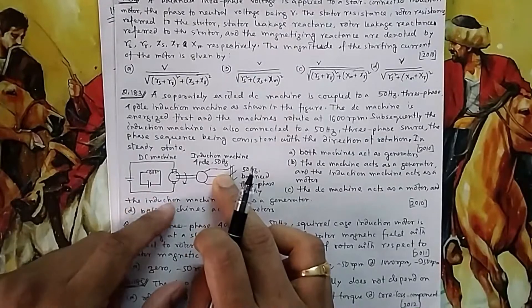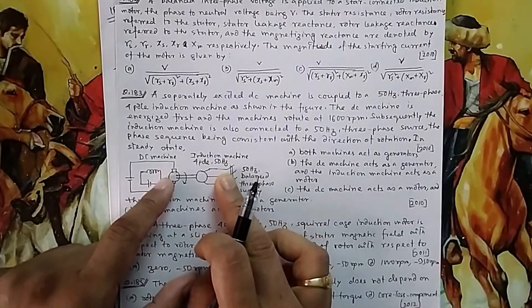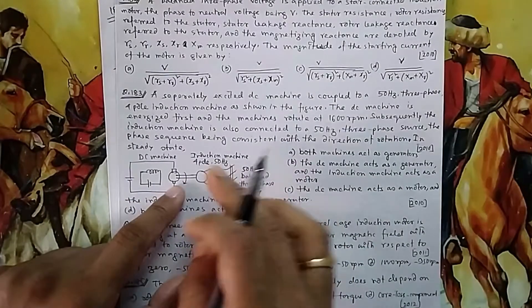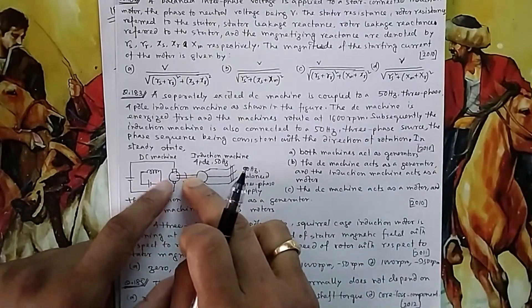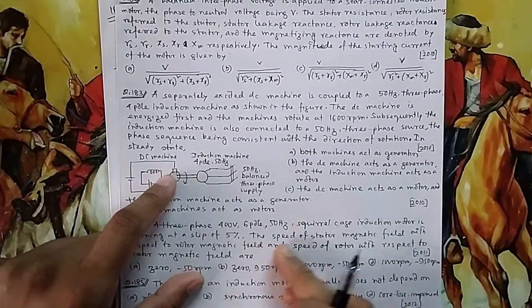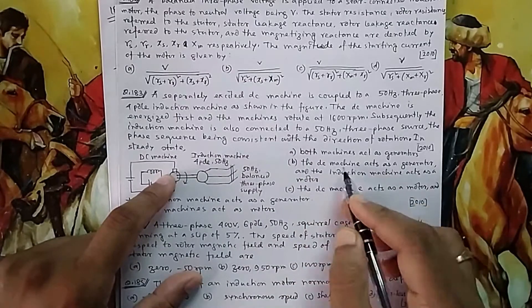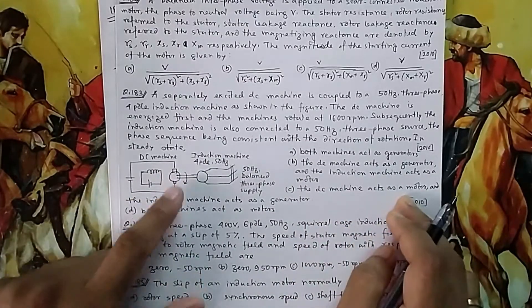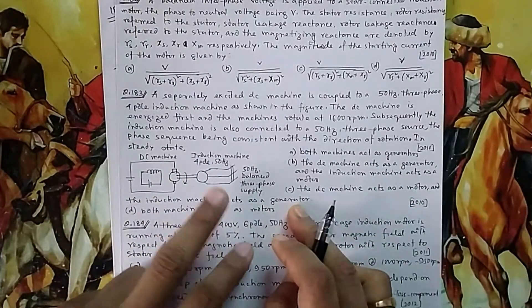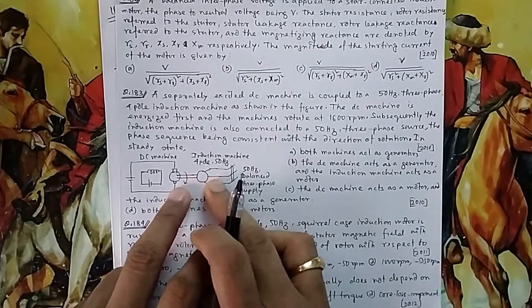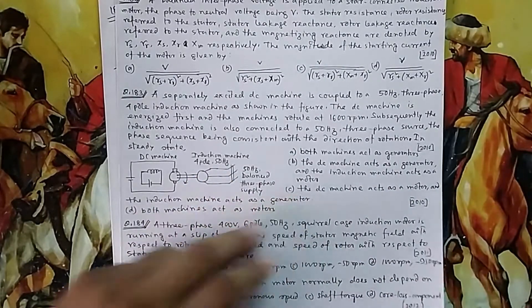If this acts like a generator, then this one obviously acts like a motor. Because generator means this shaft should have mechanical power, that mechanical power comes from this motor. DC machine acts like motor, induction machine acts like induction generator because rotor speed is more than synchronous speed. That's why option C.